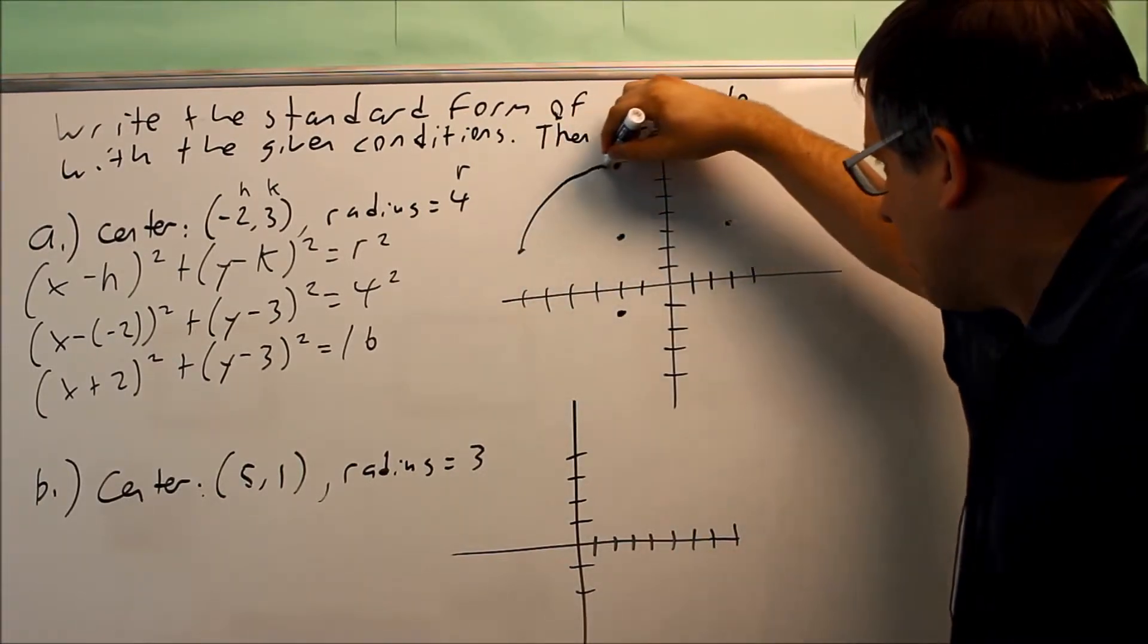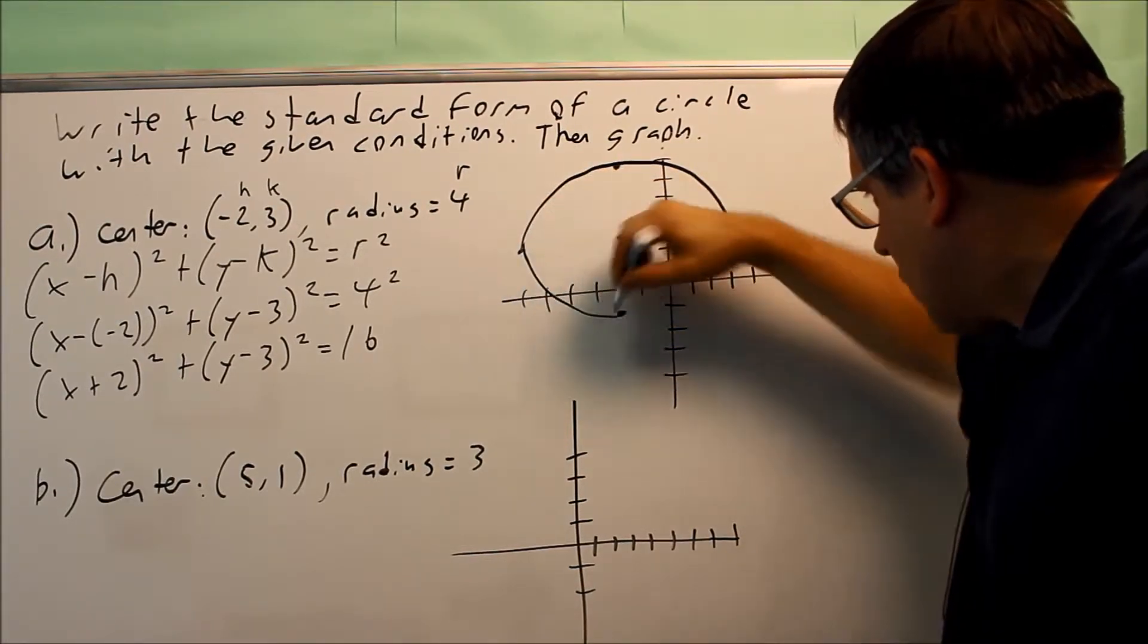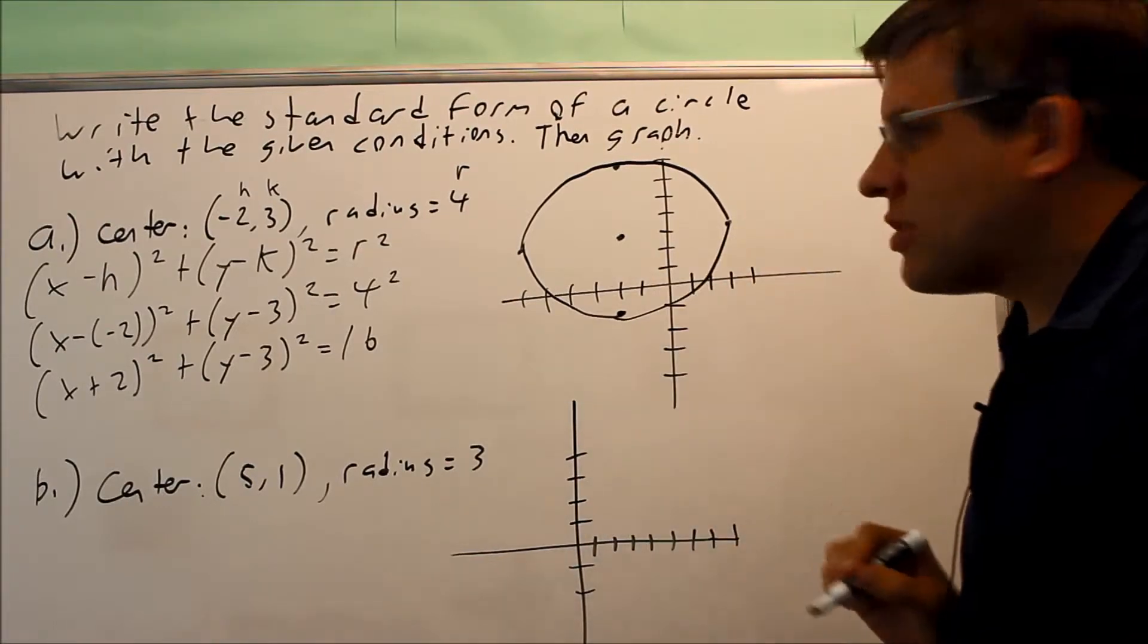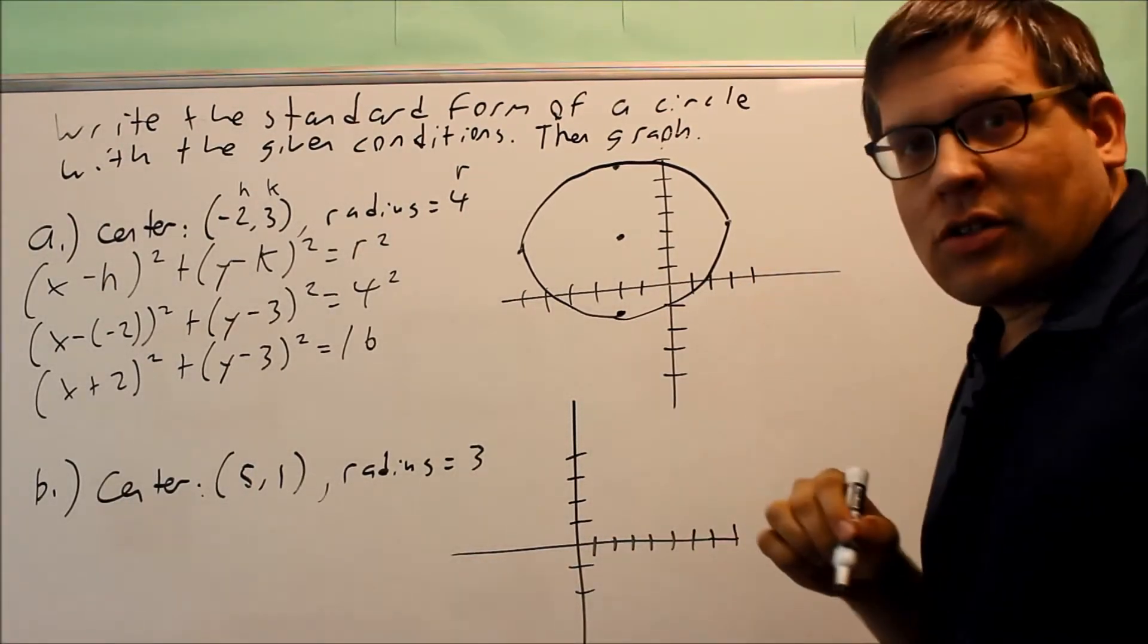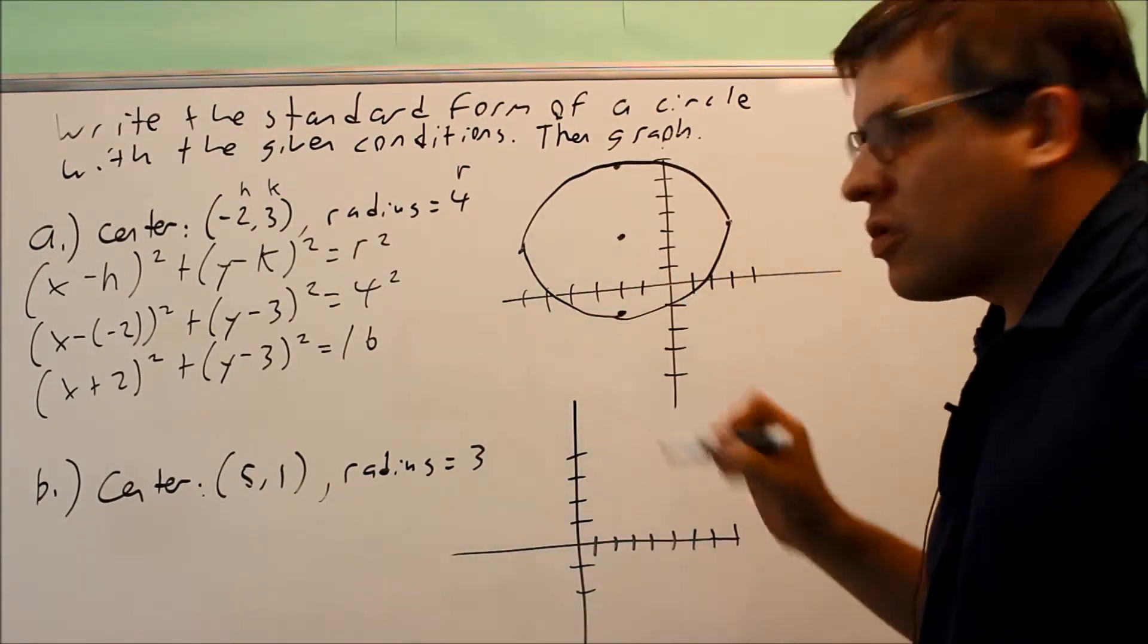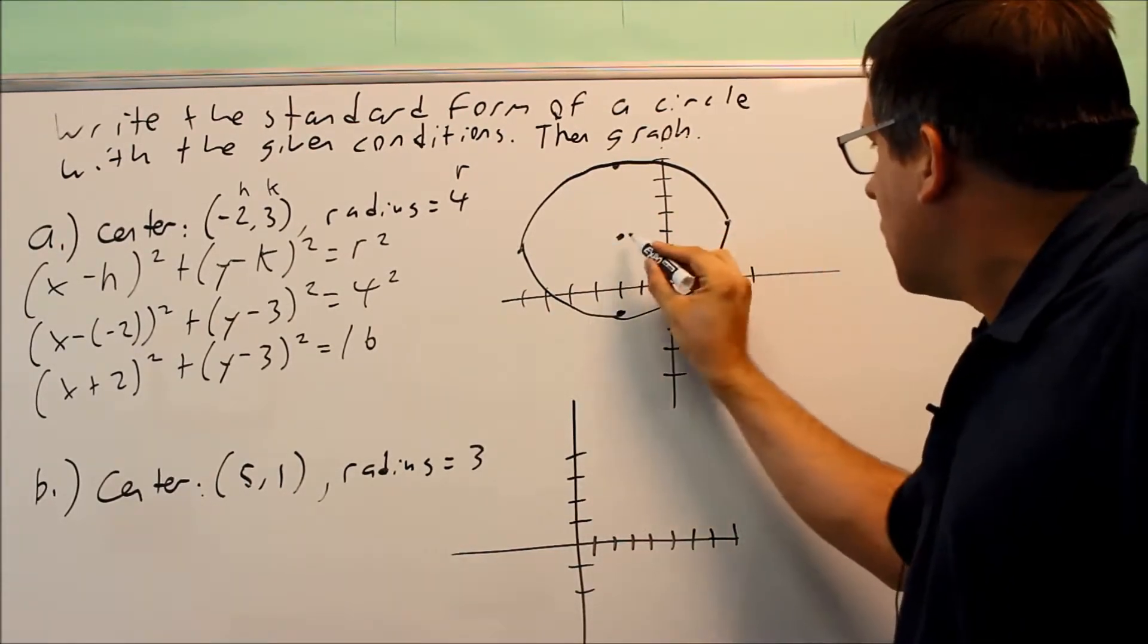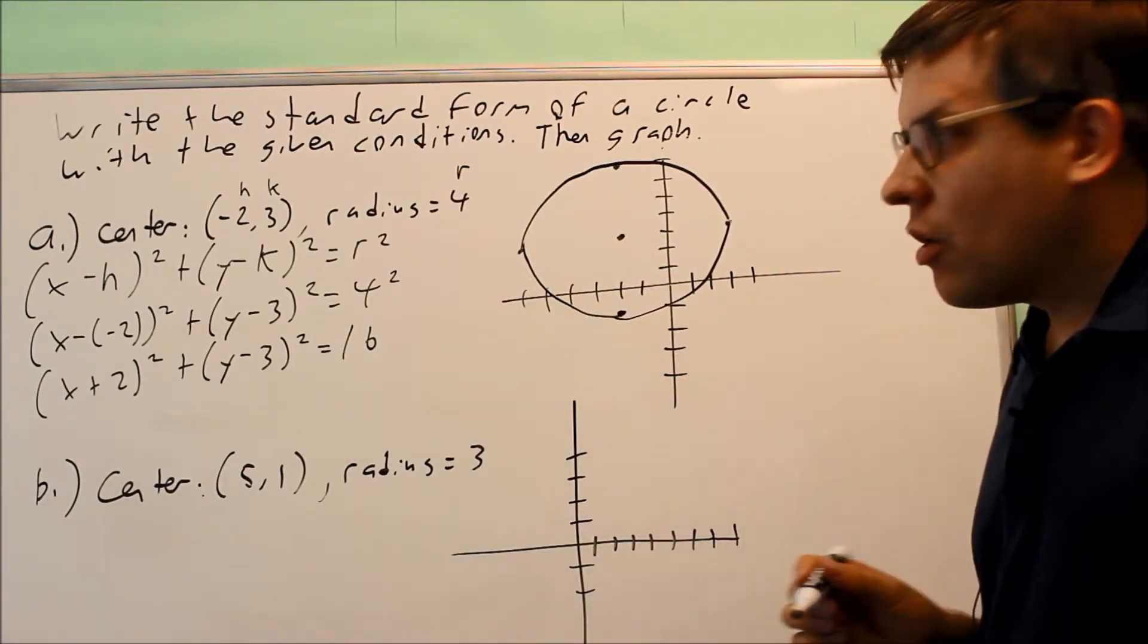So then what I'm going to do is I'm just going to connect all of them, and this is going to create the circle. Now you don't have to worry about where it crosses the x-axis. I'm not looking for that type of detail on the test itself. I'm just looking for if you know what the general sketch of the graph looks like. And that would be this one here. So again, the distance from here, here, up, and down, that's all going to be 4. That's your radius.